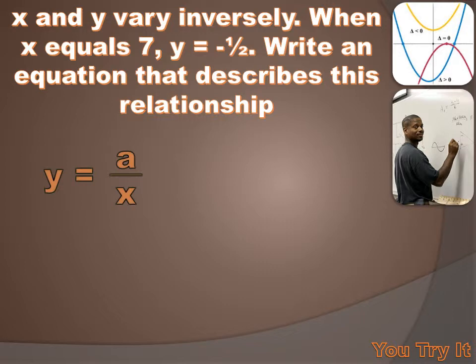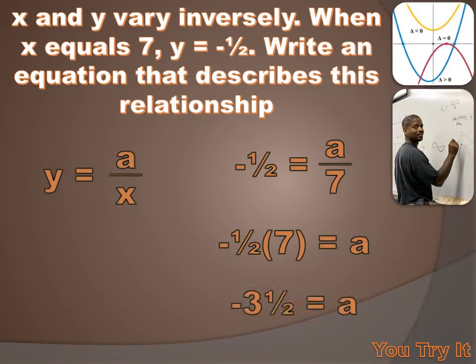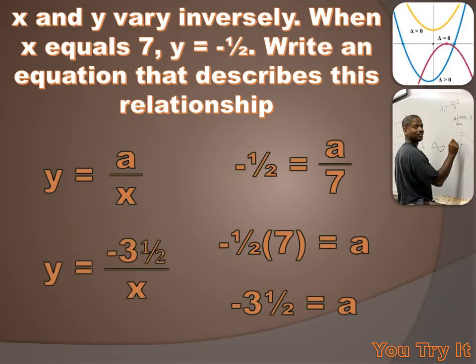Well, we know that when x equals 7, y equals minus one-half. So we could insert an x of 7 and a y of minus one-half into this equation. And it would read like this: minus one-half equals a over 7. And then I can solve for a by multiplying both sides of the equation by 7. And I get that a equals minus three-and-one-half. So now I'll substitute that a back into the generic equation. And I'll get y equals minus three-and-one-half over x.